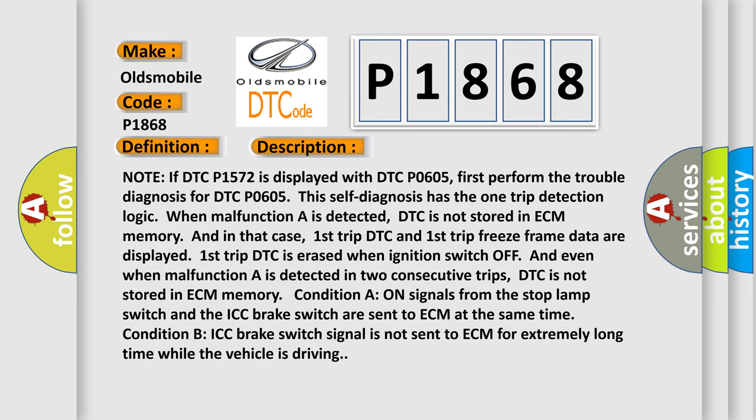Note: if DTC P1572 is displayed with DTC P0605, first perform the trouble diagnosis for DTC P0605. This self-diagnosis has the one trip detection logic. When malfunction A is detected, DTC is not stored in ECM memory, and in that case, first trip DTC and first trip freeze frame data are displayed. The first trip DTC is erased when ignition switch is off, and even when malfunction A is detected in two consecutive trips, DTC is not stored in ECM memory. Condition A: signals from the stop lamp switch and the ICC brake switch are sent to ECM at the same time. Condition B: ICC brake switch signal is not sent to ECM for an extremely long time while the vehicle is driving.